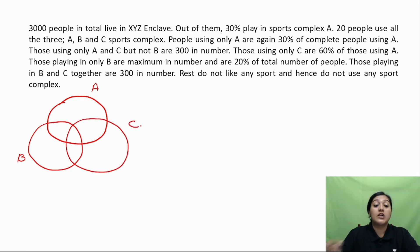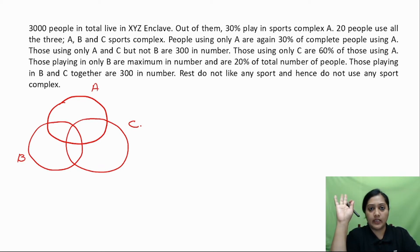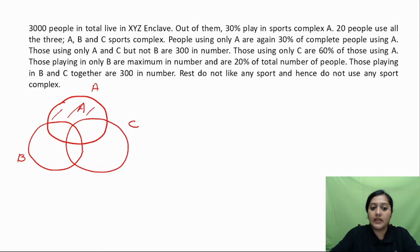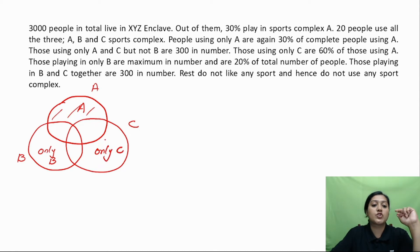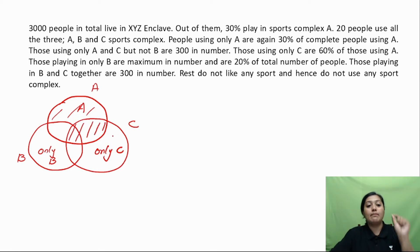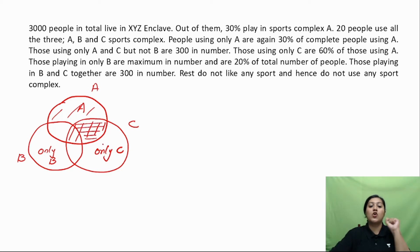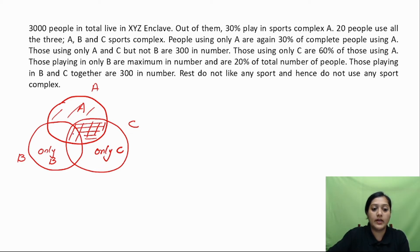In the Venn diagram, the complete circle A represents all of A. 'Only A' is just the portion of A excluding overlaps. Similarly 'only B' and 'only C' are their exclusive portions. The combination of A and C together covers their overlapping region, but 'only A and C' specifically excludes the part shared with B. There is a clear difference between the complete circle and the exclusive-only region.